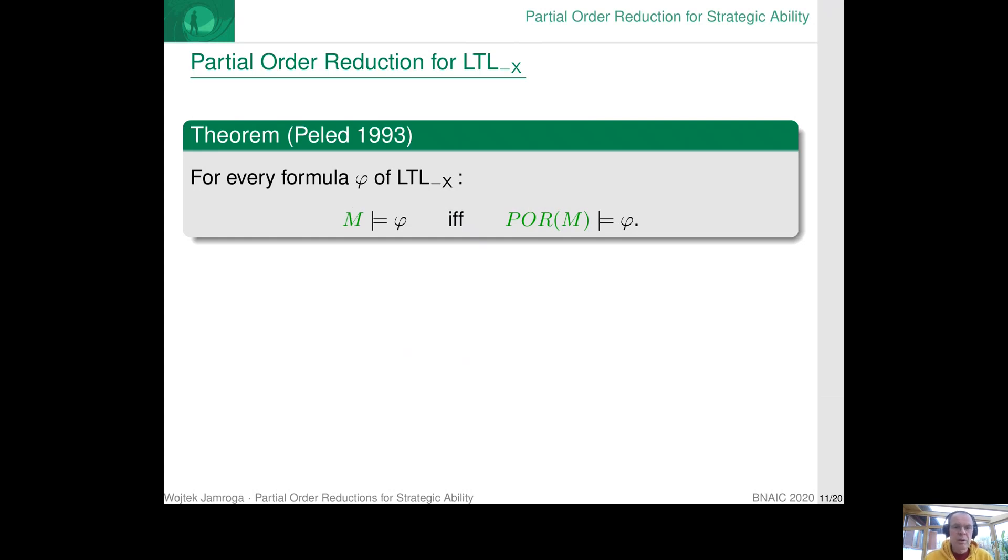So it has two nice consequences. One consequence is that, indeed, we have a reduced model which is completely equivalent. And when we do the verification, we can verify the properties that we like on the reduced model. And the second consequence, which is no less important,